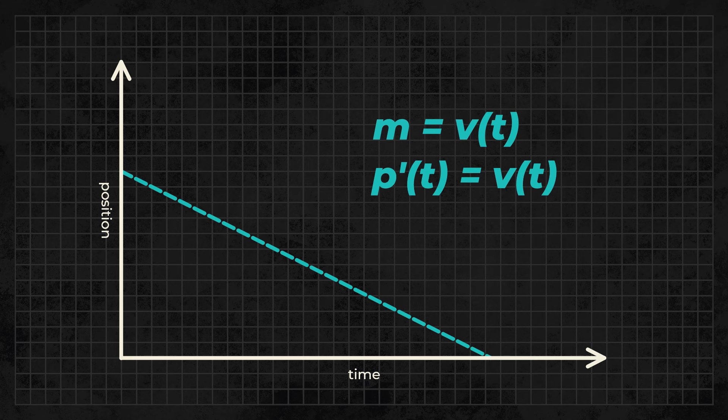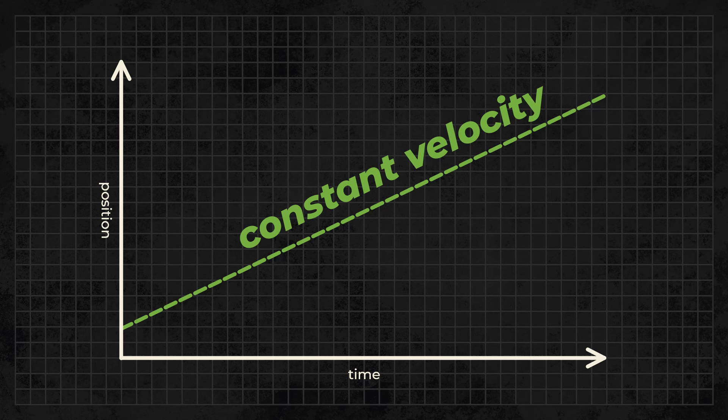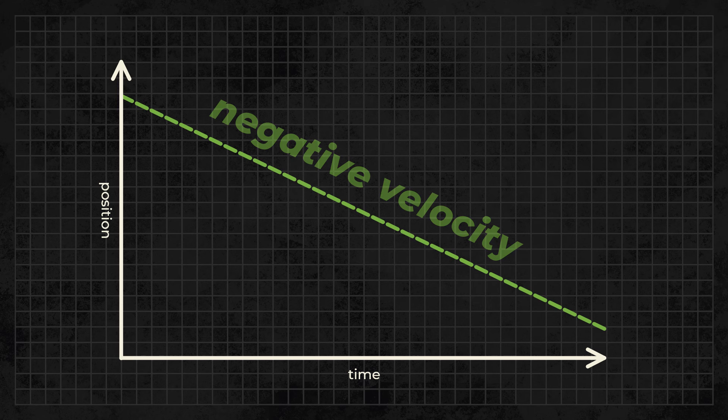If a position time graph is horizontal, it means the object isn't moving at all. If the graph is a straight line, the object is moving at a constant velocity, which is equal to the slope of that line. If the line is going up, the velocity is positive, and if the line is going down, the velocity is negative.